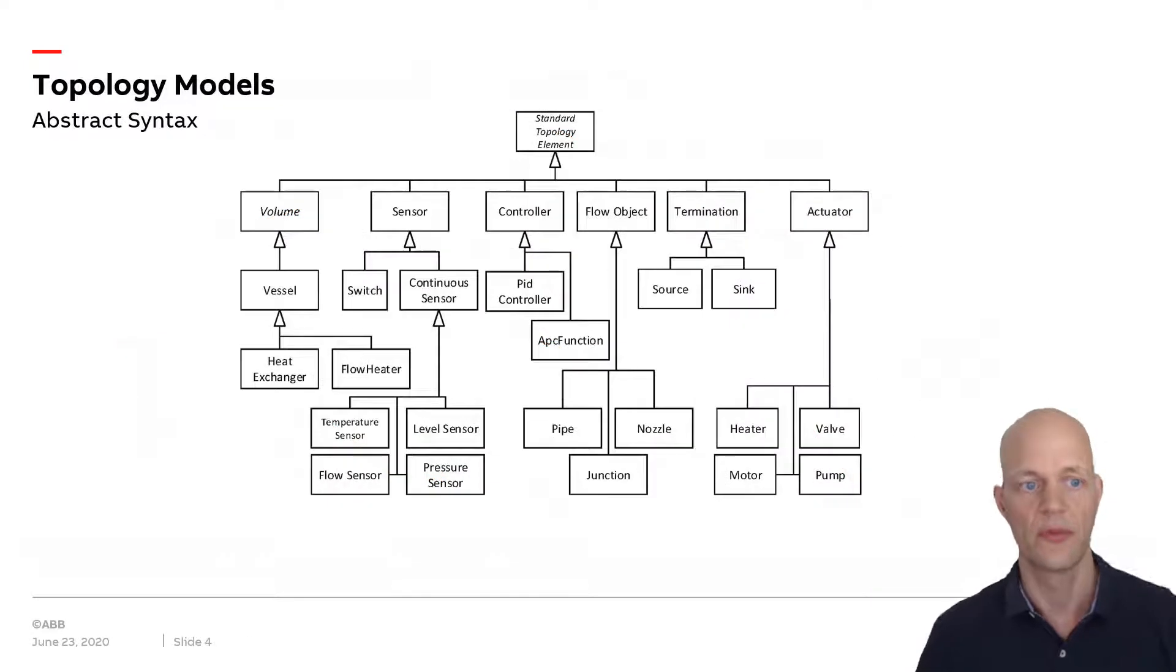However, researchers have been working on topology models which are object-oriented representations of such P&IDs. Here you see a very simplified version of a topology model that captures similar information as in the previous diagram, but does that in an object-oriented manner which enables algorithmic processing.